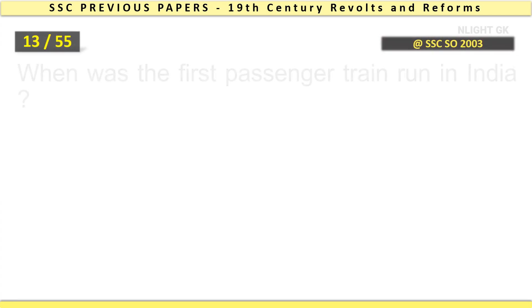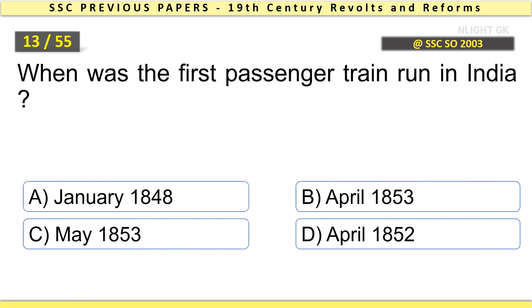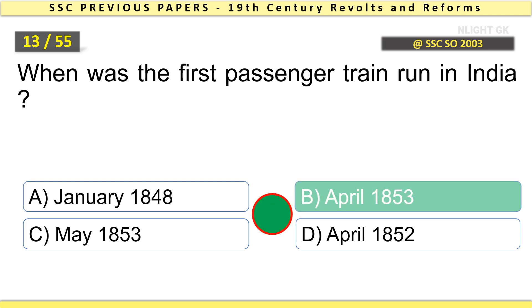When was the first passenger train run in India? April 1853.